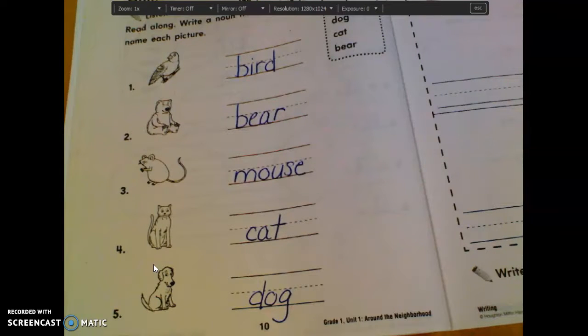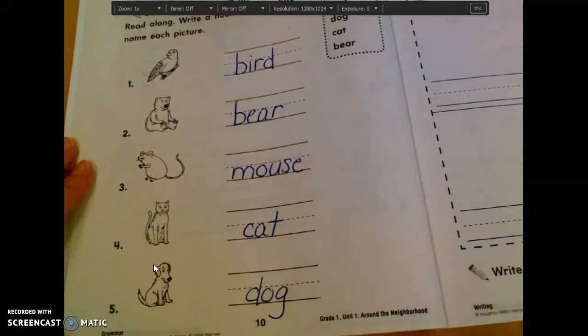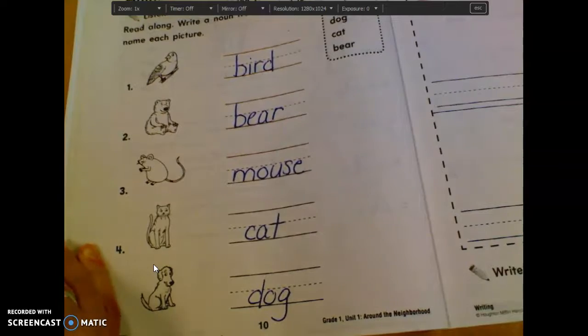Good. We're going to fill in all the names of the animals with bird, bear, mouse, cat, dog. I actually started doing this. I'm going to go on to the next page, okay? So if you're still writing, you can keep writing. Just listen for the next page.